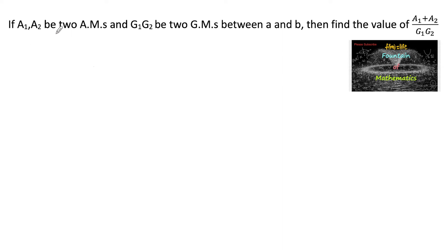If a1, a2 are two arithmetic means and g1, g2 are two geometric means between a and b, then find the value of (a1 + a2) upon (g1 × g2).